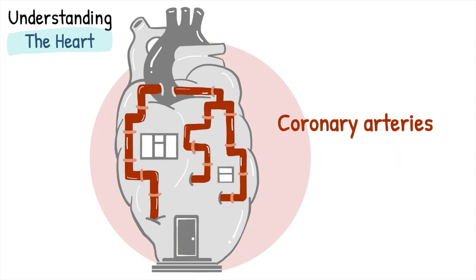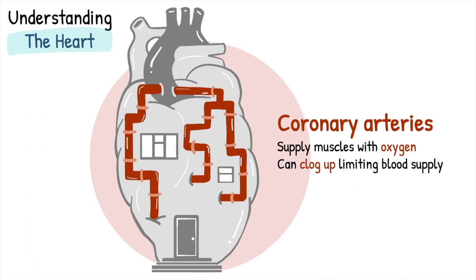The last component are the coronary arteries. The muscles require energy to contract and this is supplied by its specialized plumbing, the coronary arteries. These are small arteries on the surface of the heart that supply the muscles with blood, providing them with oxygen and nutrients so they can function. Similar to the pipes at home, these arteries can clog up, which will limit blood supply and can result in angina or even heart attacks — one of the commonest causes of death in the world.